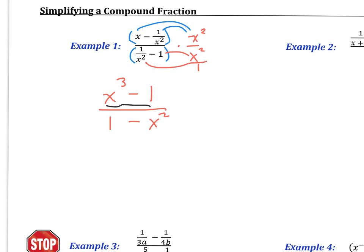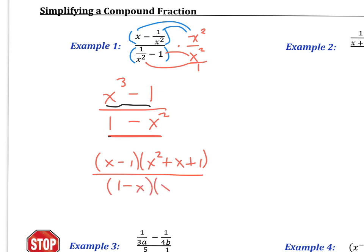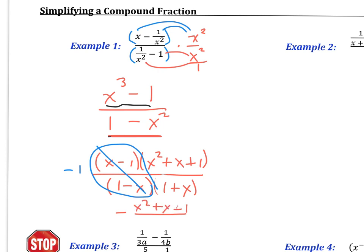I can do some factoring, so I'm not done yet. I'm going to factor x cubed minus 1 using the concept of the difference of two cubes — that factors to (x minus 1)(x squared plus x plus 1). In the denominator, I see the difference of two squares, which factors to (1 minus x)(1 plus x). I see that these are opposites, so they cancel out and become negative 1. Our overall answer is the negative of (x squared plus x plus 1) over (1 plus x), which you can also write as (x plus 1).